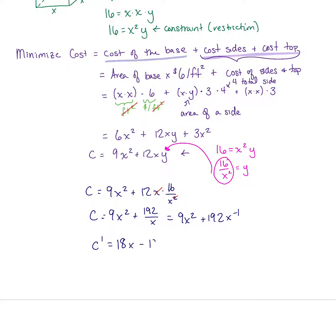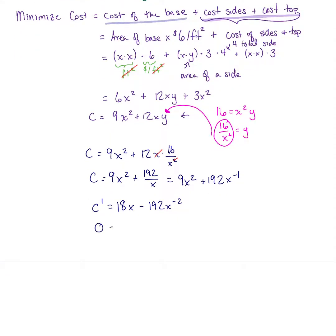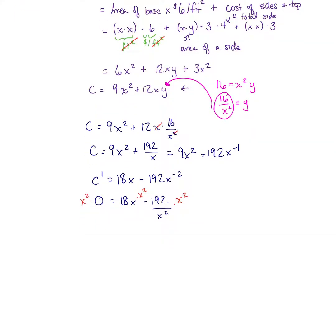We take our derivative and get 18x minus 192x to the negative 2 power. We need to set it equal to zero to find critical points. I'll take care of that negative 2 exponent and put that on the bottom as x squared. We should take a quick look about when these derivatives are undefined because that's a possible critical point, but our derivative is only undefined at zero, and zero is not reasonable for x because that would mean the base is zero by zero.